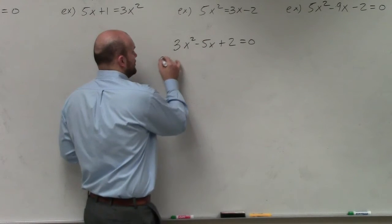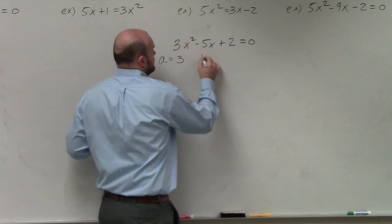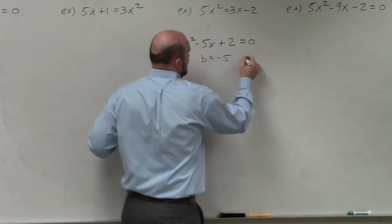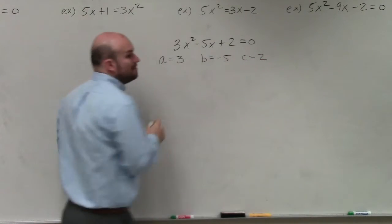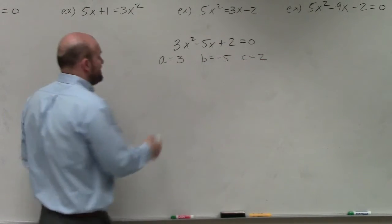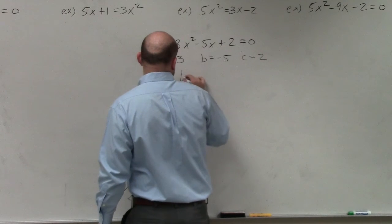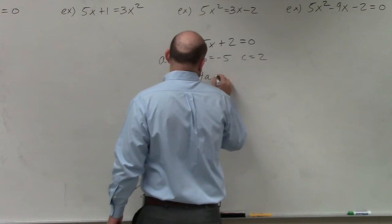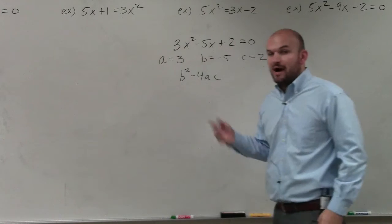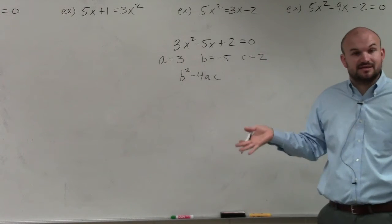Step number two: label A, label B, and label C. Remember, the discriminant is b² - 4ac. So I want to make sure I know what a, b, and c are.